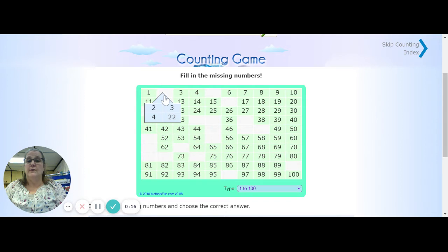What you're going to do is where there is a missing number, you are going to click on it and then it's going to bring up four numbers for you to choose from. I know that after one comes the number two, so I would click on the number two and then it puts it where it's supposed to be.